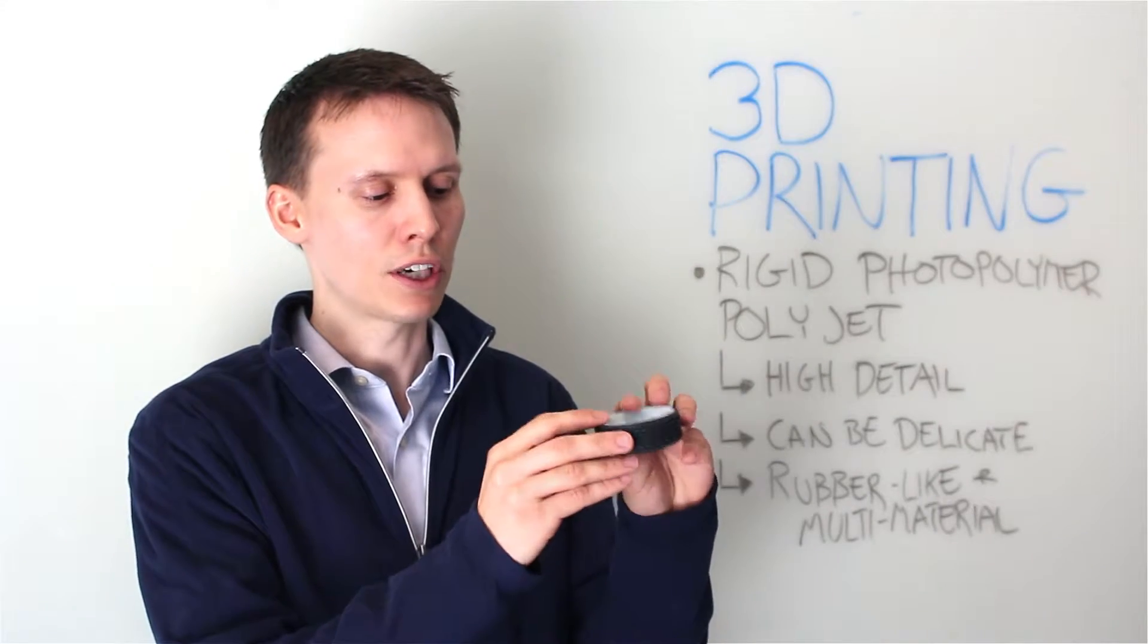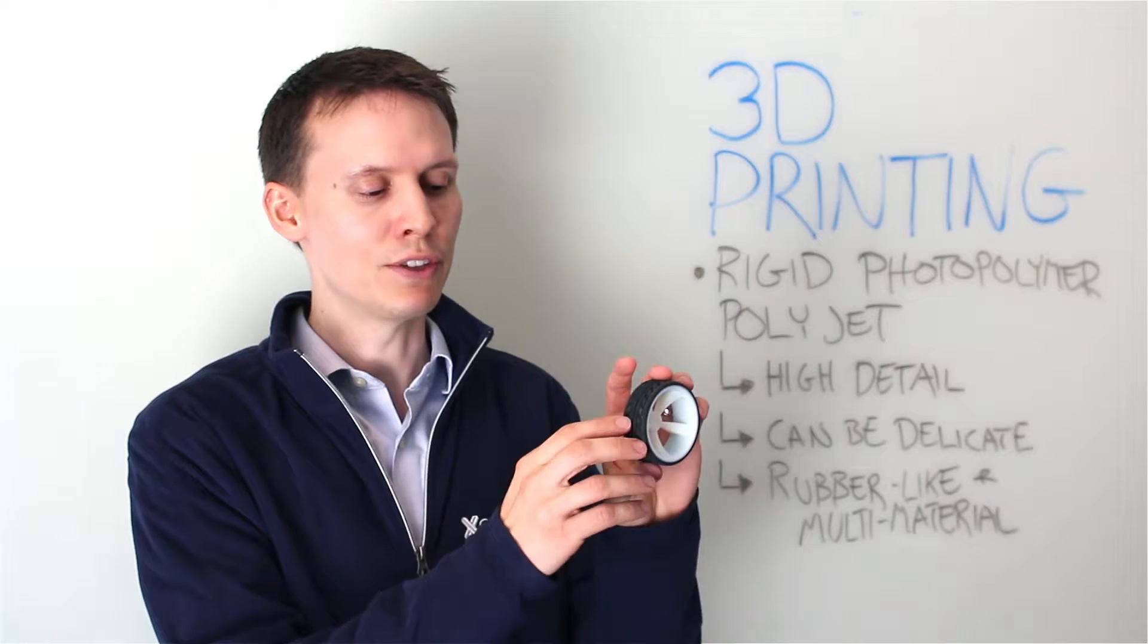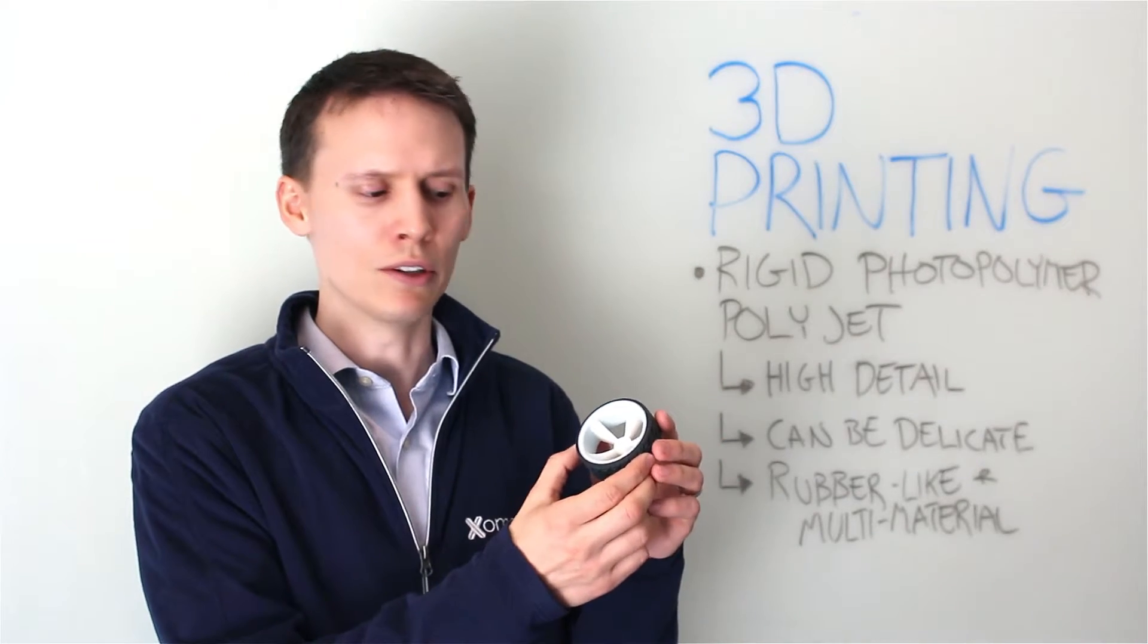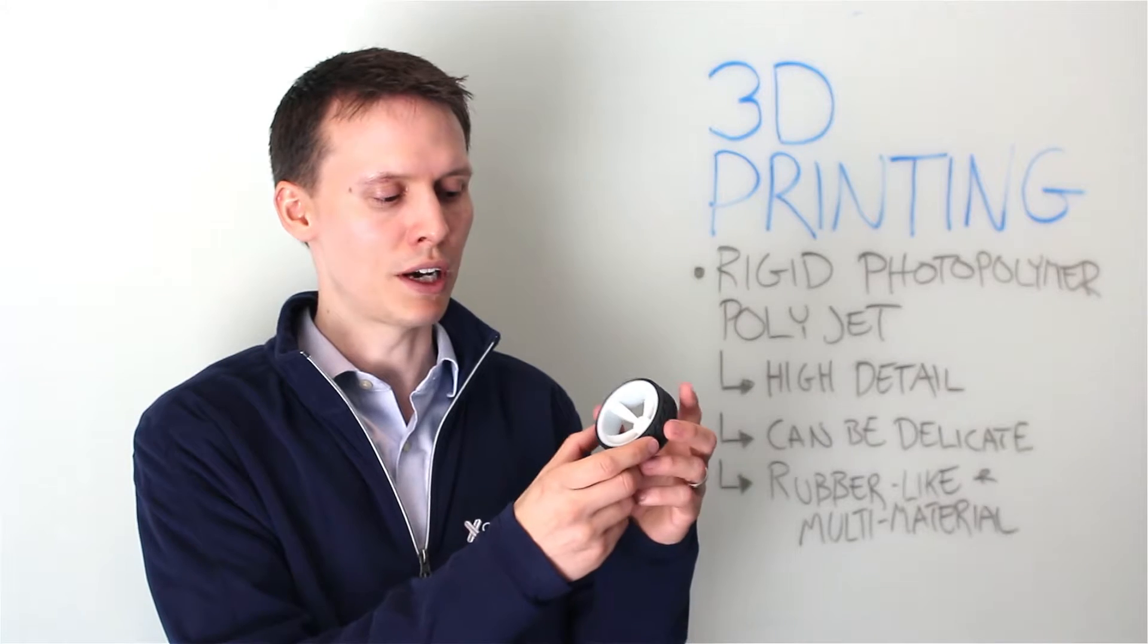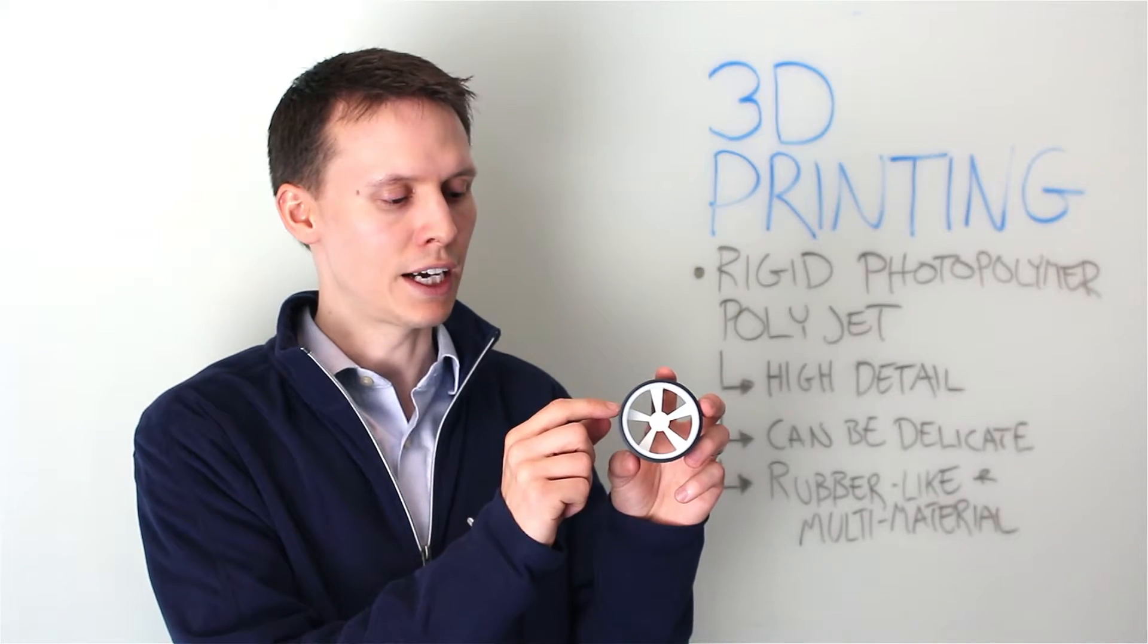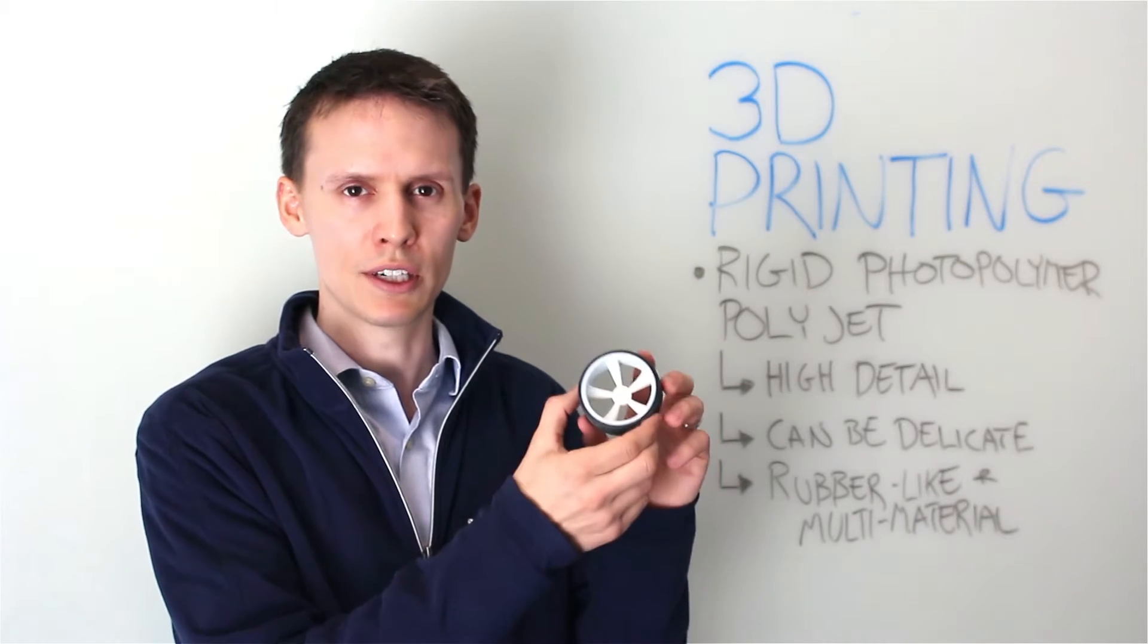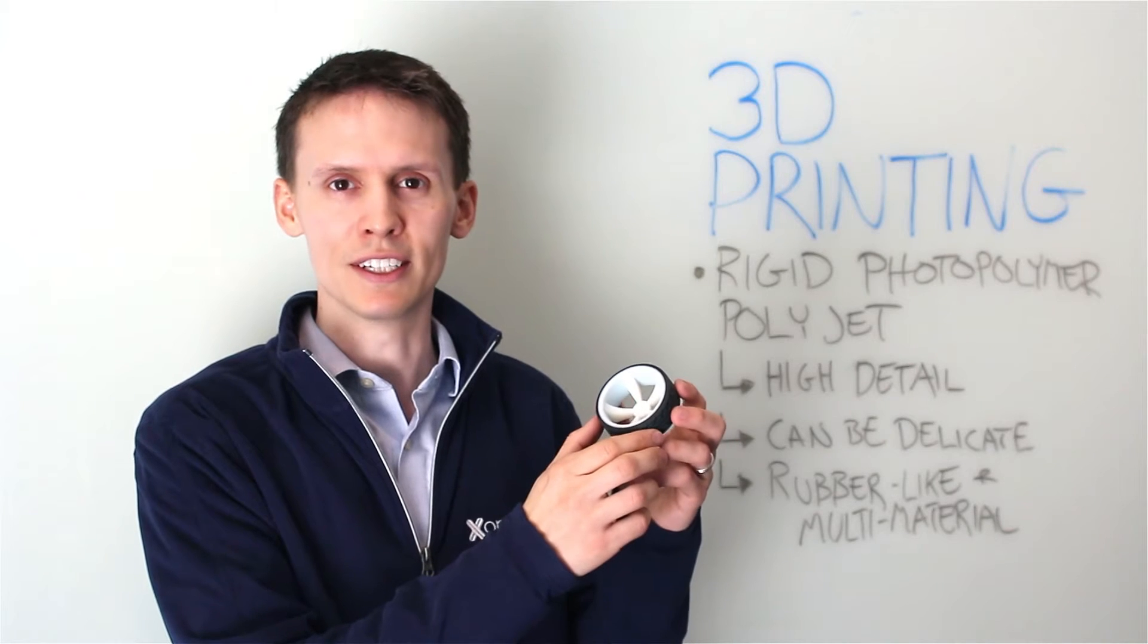With PolyJet, we can do multi-material objects and even rubber-like materials. In this case, I've created a wheel using two shells in my STEP file assembly and I applied a Shore 60 rubber to the outer shell while I kept it rigid on the inside.